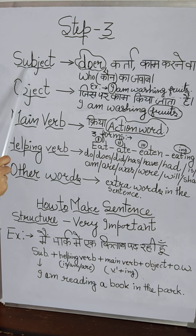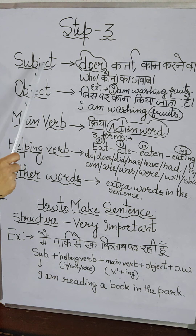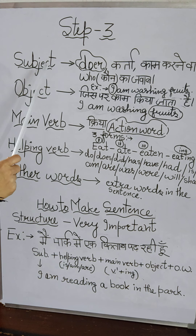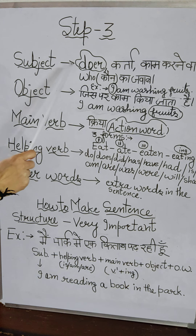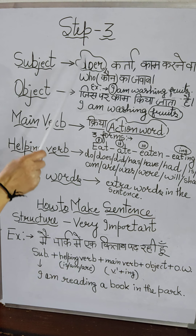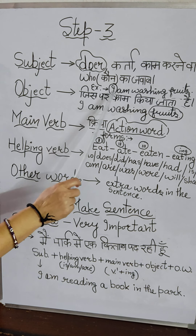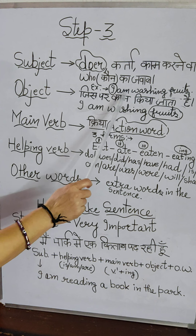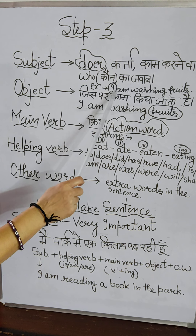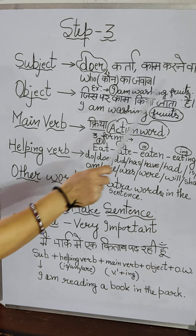We will talk about the subject. When you speak any sentence, the person — the doer, the person who is doing — is the subject. For example, 'I am washing fruits.' So in this sentence, I am washing fruits.